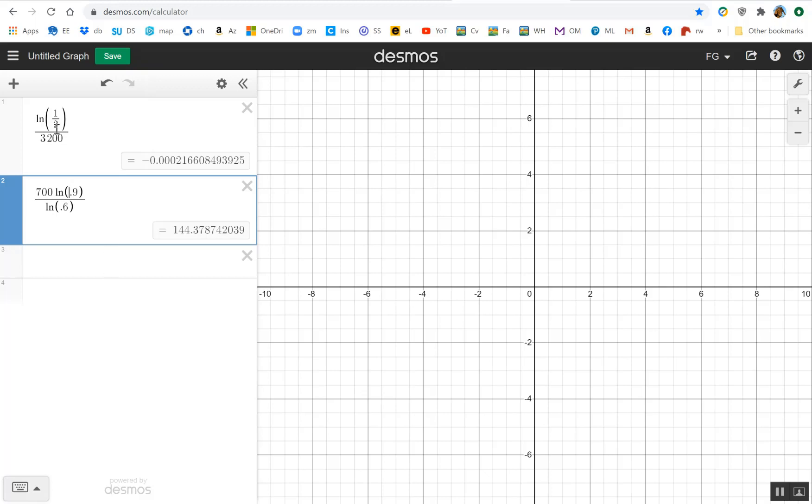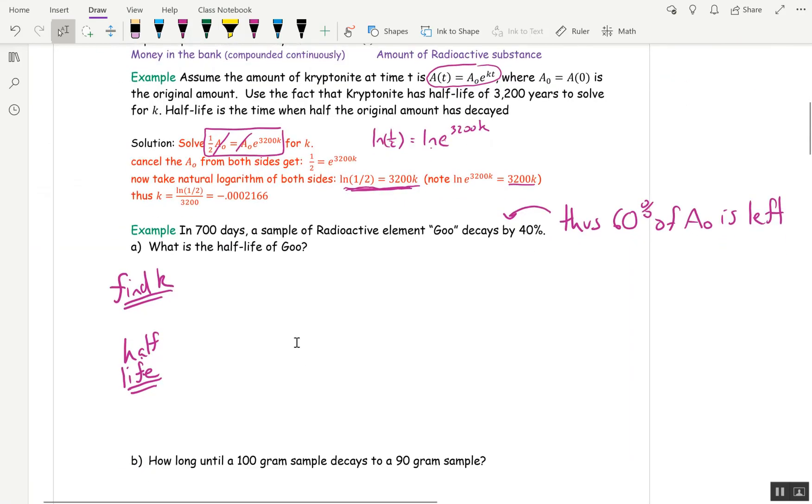Just a note on your next test, you won't have a calculator. So all your answers will be in exact form. They won't be decimals. They'll be things like natural log of a half over 3,200. Okay. So let's do some more examples.